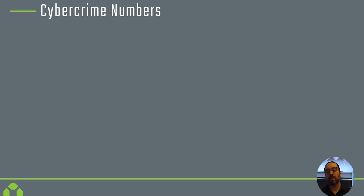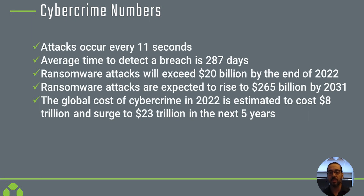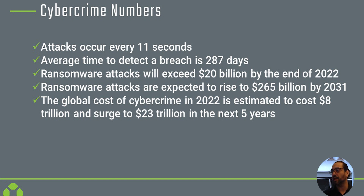These cybercrime numbers are not meant to be a scare tactic — they show what we're up against. Keep these in mind as we talk about zero trust infrastructure. Attacks occur every 11 seconds based on 2022 data. The average time to detect a breach is 287 days. Ransomware will exceed 20 billion dollars by the end of 2022 and is expected to rise to 265 billion dollars in the next nine years.